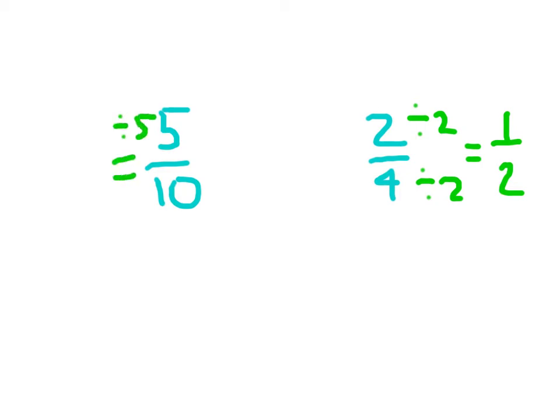5 divided by 5 is 1, and 10 divided by 5 is 2. So 5 tenths simplified is 1 half, 2 fourths simplified is 1 half - they are equivalent. I put the equal sign in between them and I write yes.